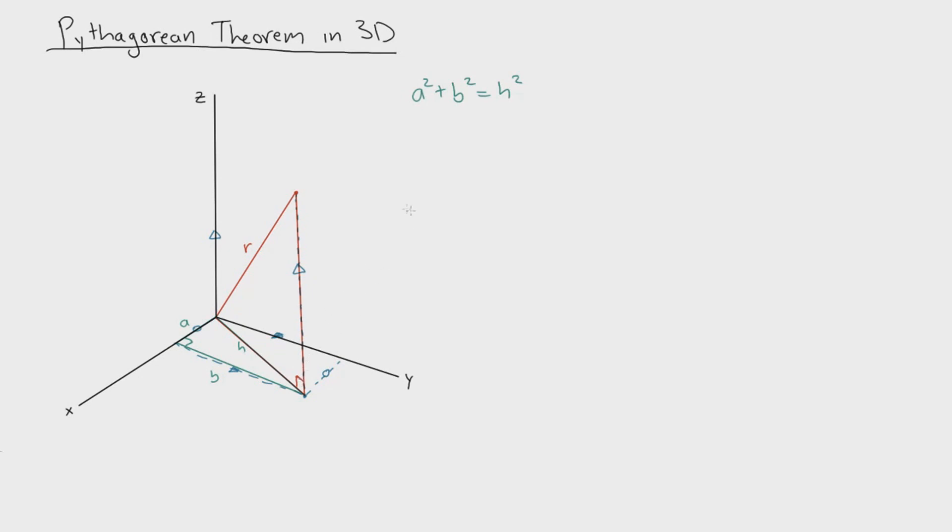this angle must be perpendicular as well. So what I'm saying is that the x-y plane is this, and we're having a line point directly out of it. Therefore, this angle is 90 degrees.